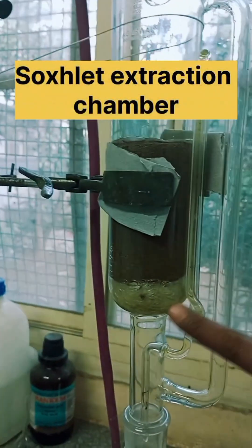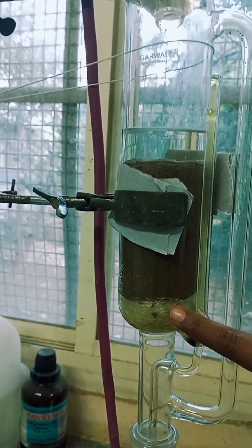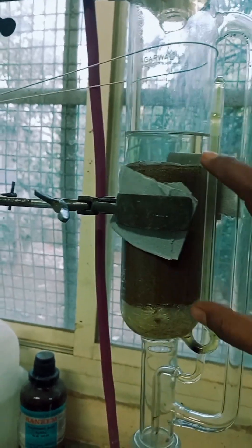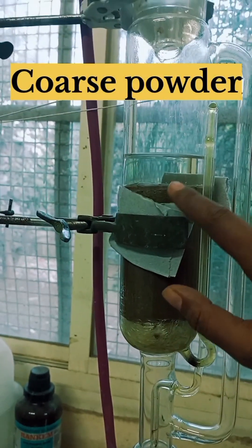The Soxhlet extraction chamber has glass wool filling the gaps. After that, the filter paper is used. After the filter paper, the coarsely powdered form of crude drugs is filled, and again the filter paper is used.